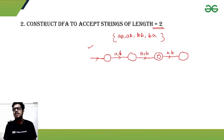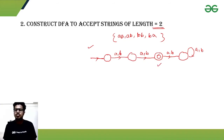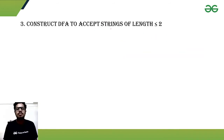To fix this, if the final state receives another 'a' or 'b', it will go to a dead state, also called a trap state. Once in the dead state, it can never return to the final state. This means if the length exceeds 2, the string is rejected. Only strings with length exactly equal to 2 are accepted; strings with length less than 2 are also rejected.